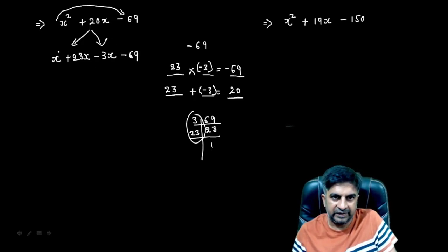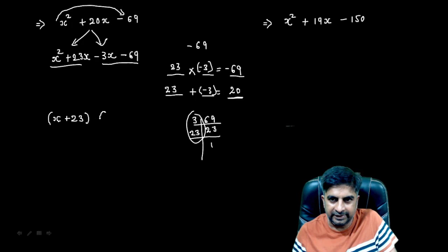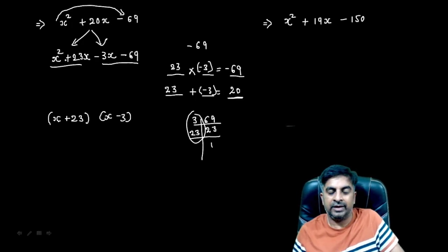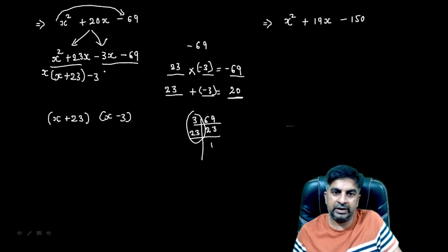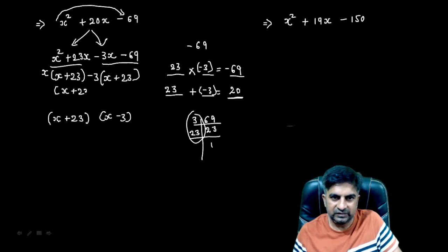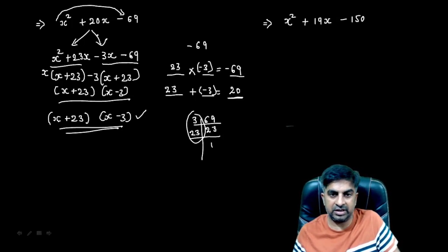So we have x² + 23x − 3x − 69. Take out x as common from the first two terms, leaving x + 23. Then take out −3 as common from the last two terms — when taking negative common, the sign inside flips — leaving x + 23. Take out x + 23 as common, and x − 3 is your other factor. So the factors are (x + 23)(x − 3). The shortcut is useful for MCQ questions, but for full solutions you must show all steps.